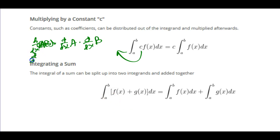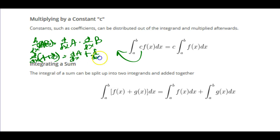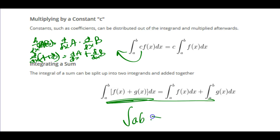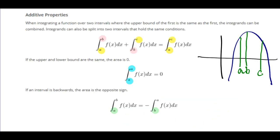The derivative of A plus B is exactly what you think it is — that's the derivative of A plus the derivative of B. So addition works. But remember, just like derivatives, the integral of A times B does not equal the integral of A times the integral of B. Don't go down that trap. But there are many properties that do work.